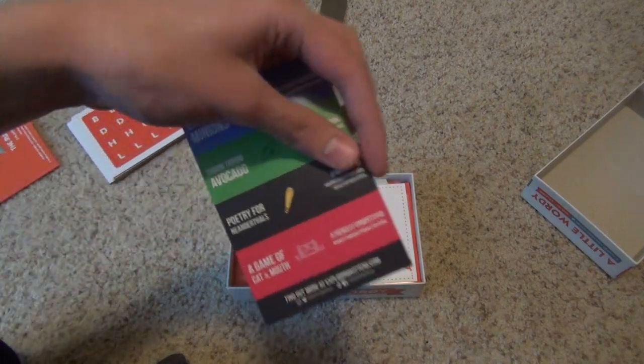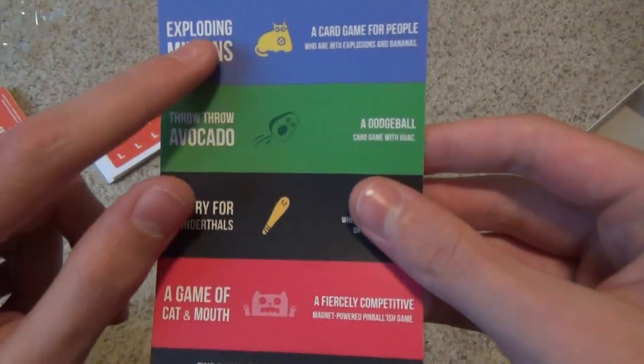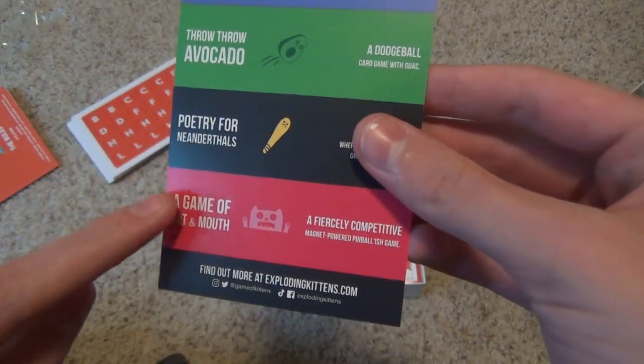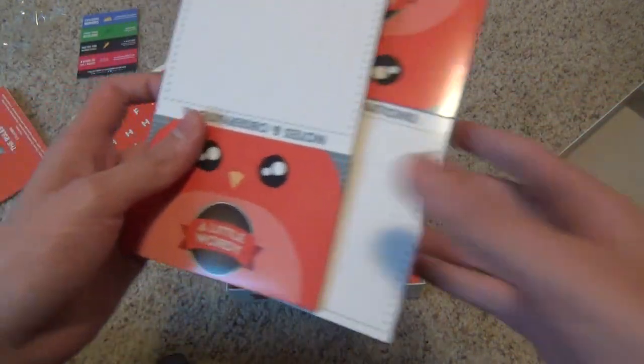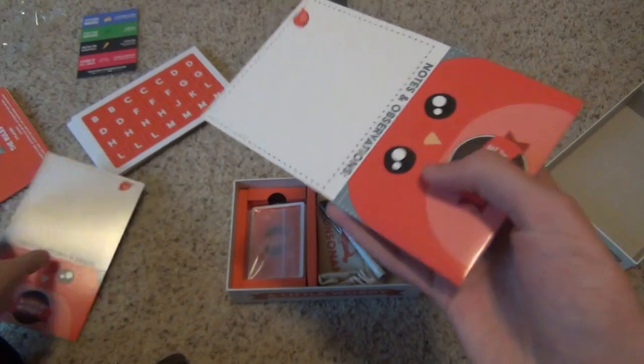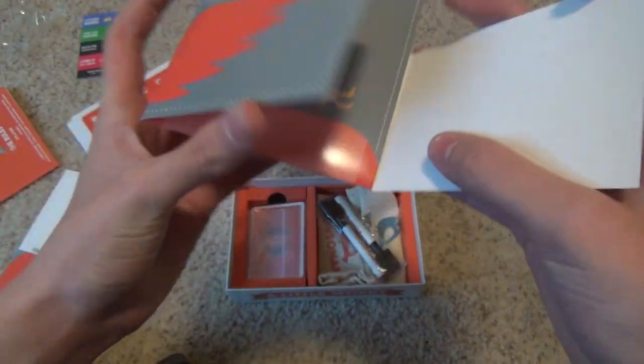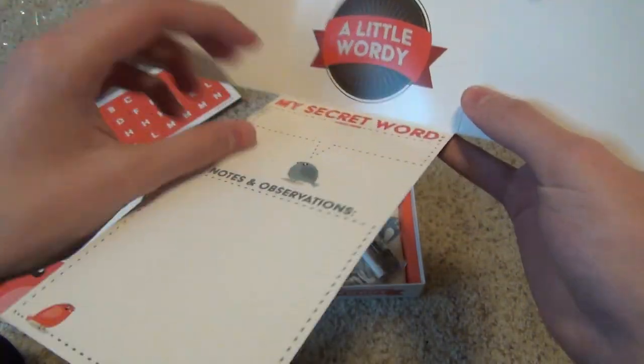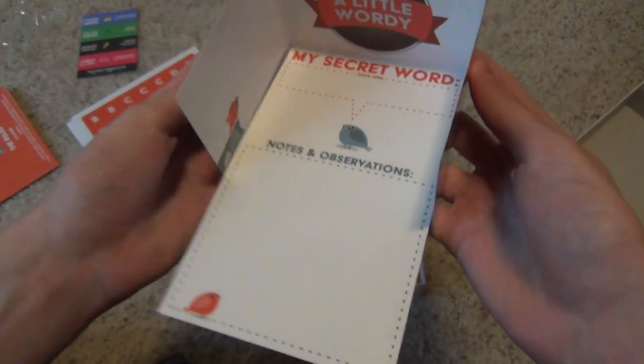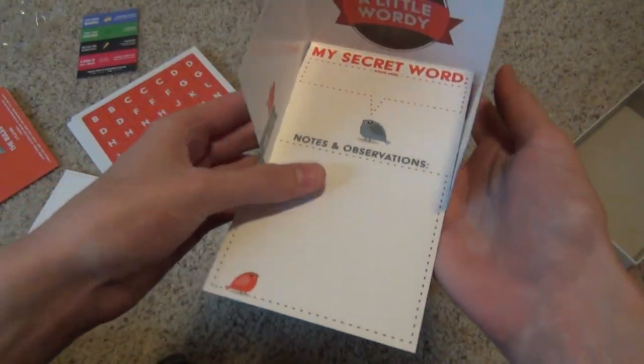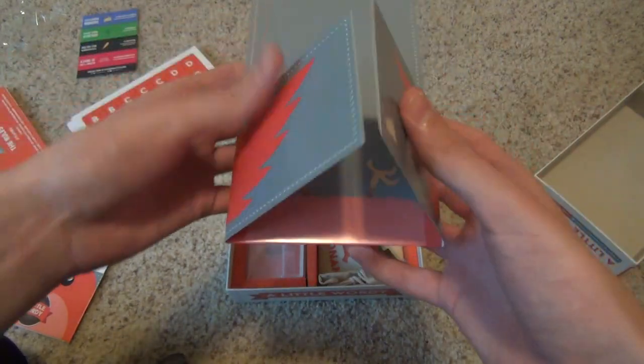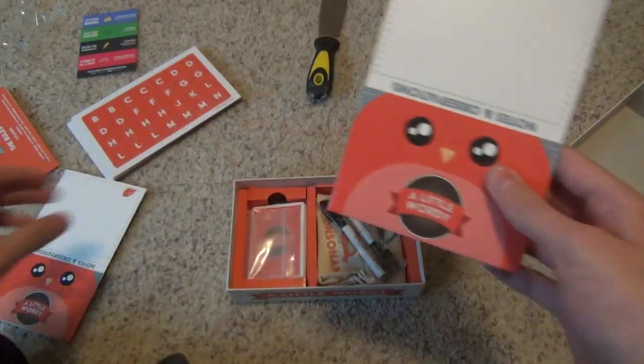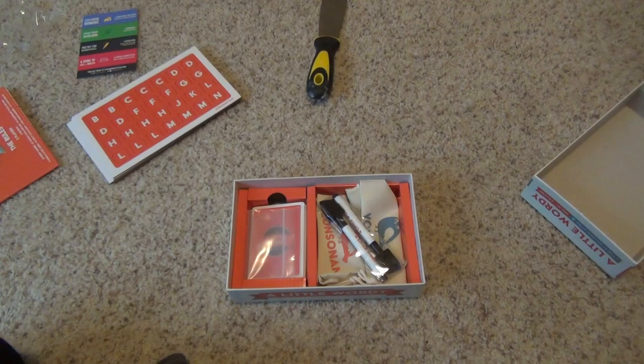We have a code on the back, but we have Exploding Minions, Throw Through Avocado, Poetry for Neanderthals, and A Game of Cat and Mouth. So we also got two of these, Notes and Observations. This is how you do your secret word. It sets up like this, and then you write down your secret word.